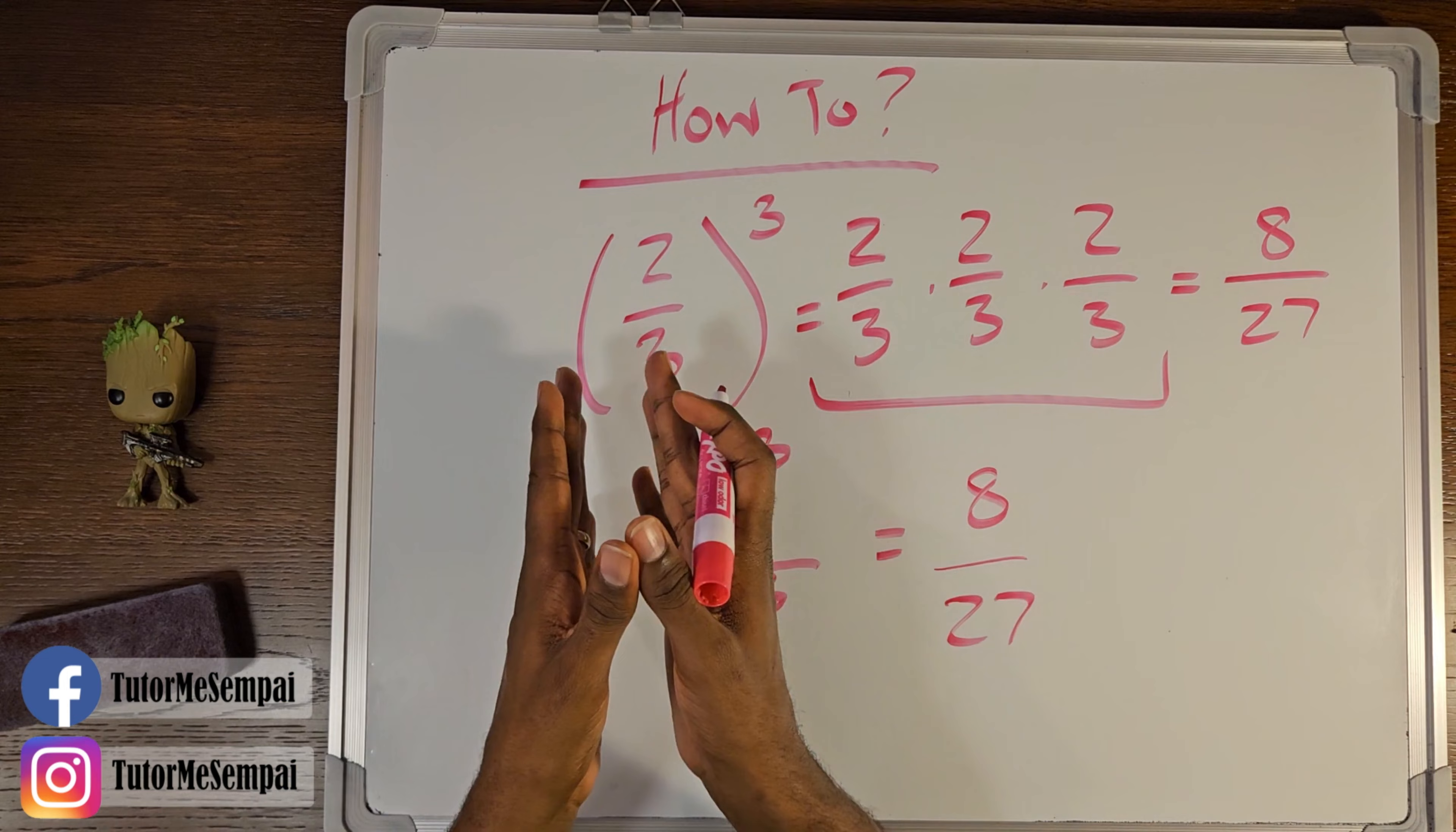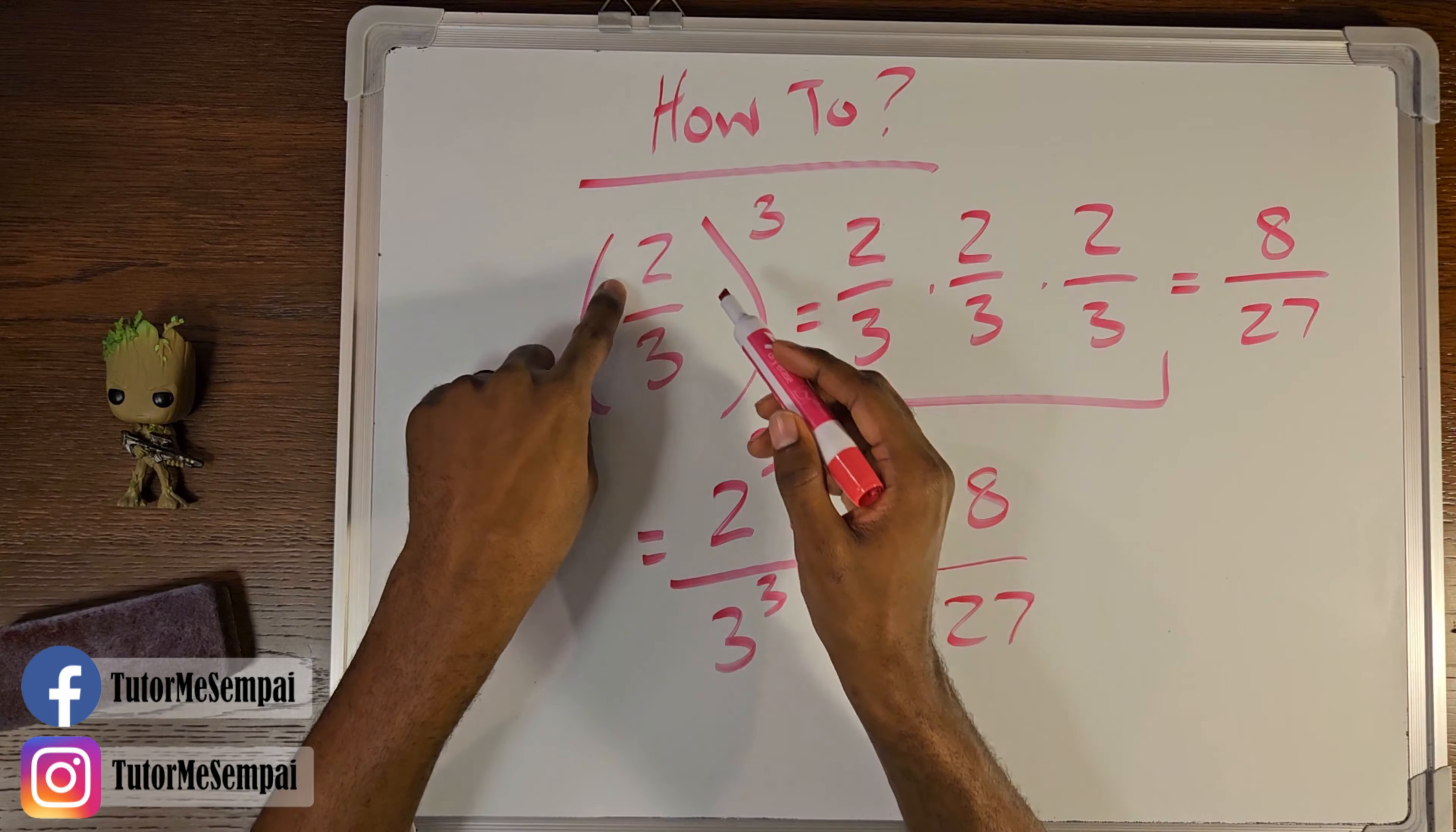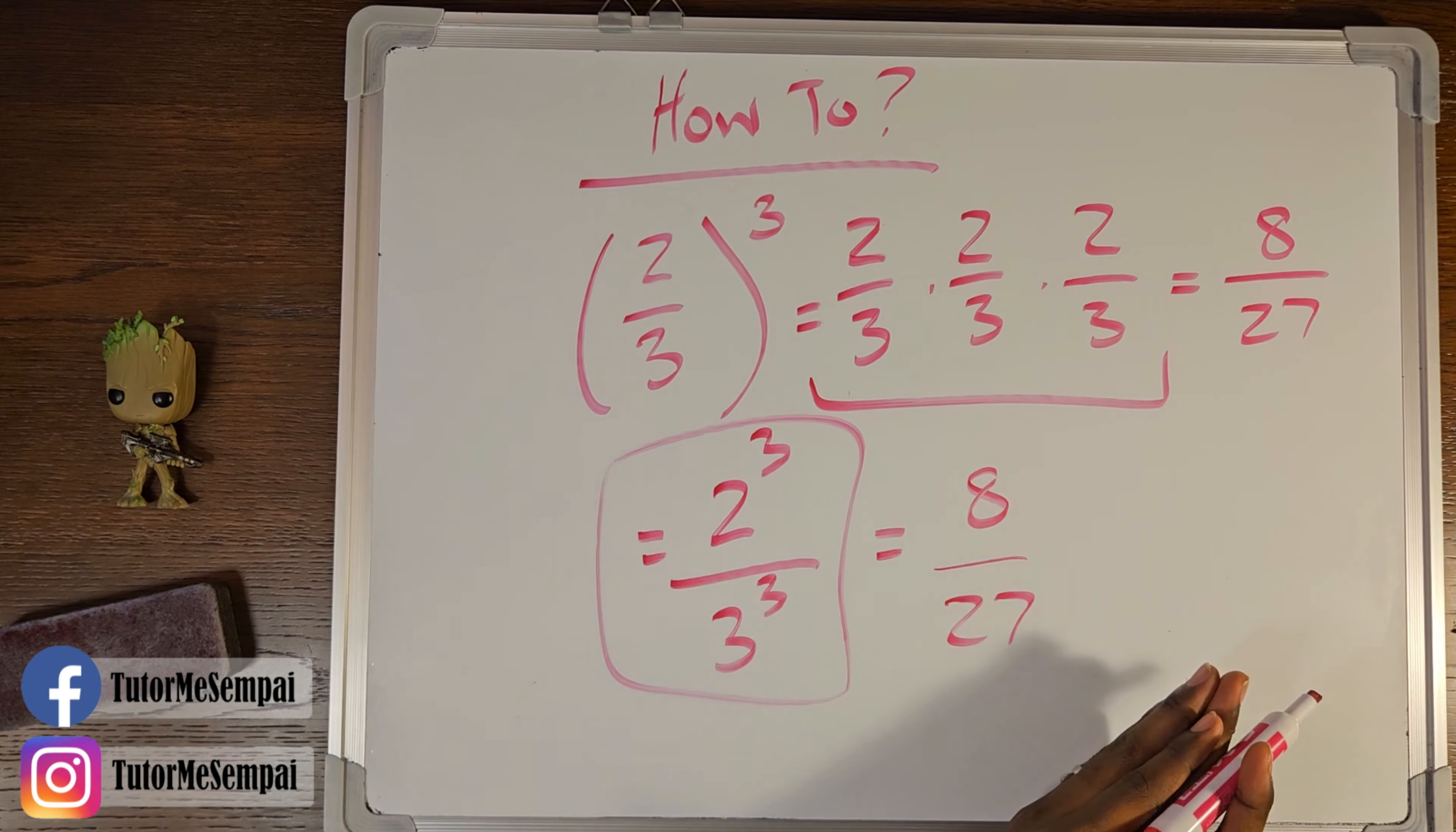So taking a step back, what does this mean for our fractions that we're raising to our exponents? How do we just go from here to here? Well, it seems like we're distributing this exponent to both the top and the bottom. So whatever your exponent is, you're going to raise your numerator to that same exponent and your denominator to that same exponent, and that's how you're going to get to this step. And then you can evaluate that as you see fit.